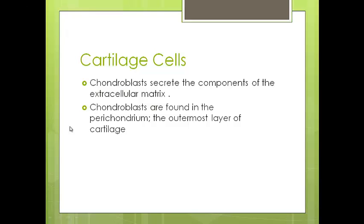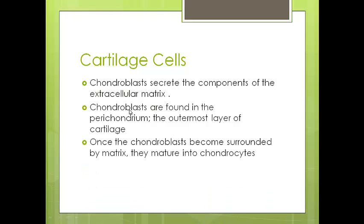Chondroblasts are found in a specific part of the cartilage called the perichondrium. 'Peri' as a prefix means around, so the perichondrium is the outermost layer of the cartilage, and that is the region where you find the chondroblasts. What happens is the chondroblasts release or secrete the components of the extracellular matrix into their surrounding vicinity — the area found right around them. Once the chondroblasts become surrounded by the matrix, they mature and turn into what we call chondrocytes.